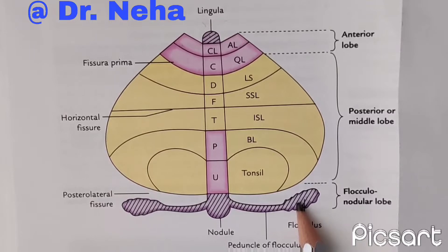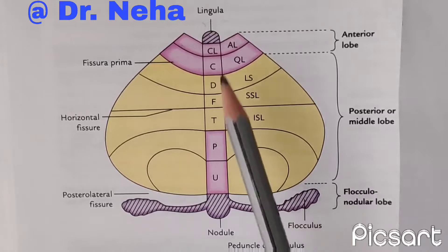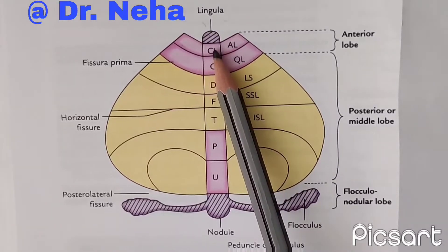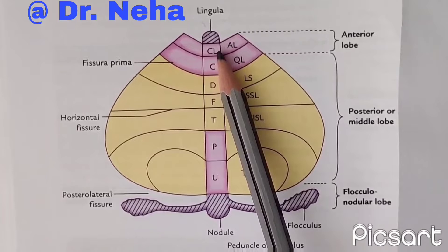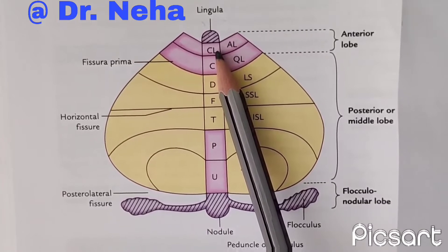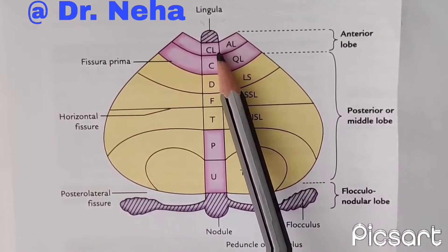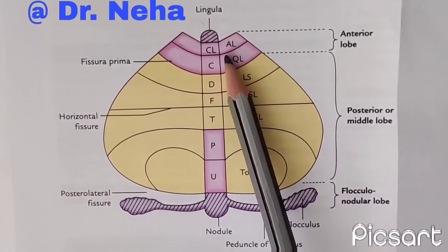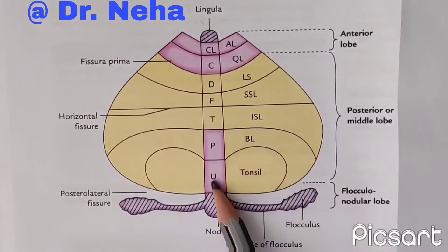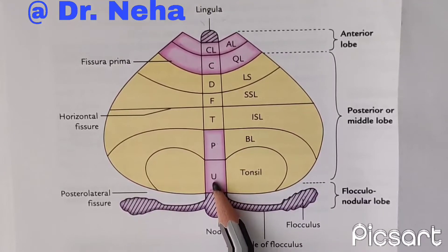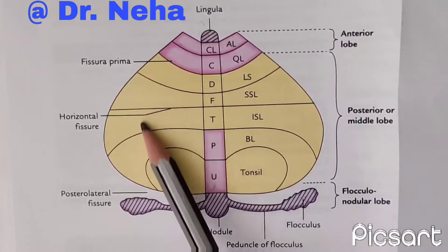The archicerebellum controls the tone and posture of the muscles of the trunk. Then we have the paleocerebellum, which is shown in pink. It is neither the oldest nor the newest part. It contains the whole of the anterior lobe except the lingula, pyramid, and uvula, and it has the function of controlling the muscles of the limbs.